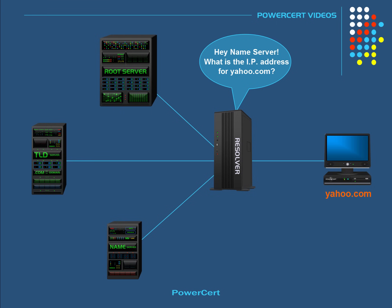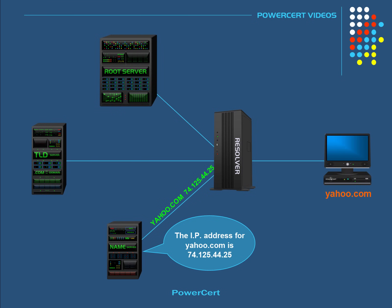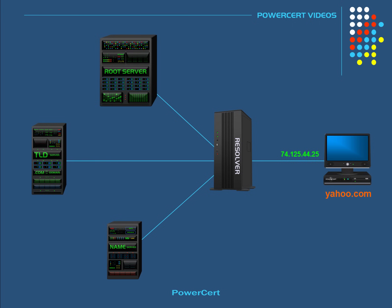So when the authoritative name server receives the query from the resolver, the name server will respond with the IP address for yahoo.com. And finally, the resolver will tell your computer the IP address for yahoo.com, and then your computer can now retrieve the yahoo.com webpage. It's important to note that once the resolver receives the IP address, it will store it in its cache memory in case it receives another query for yahoo.com, so it doesn't have to go through all those steps again.